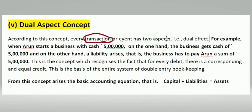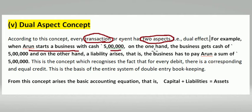Over your transactions, two aspects will be affected. That will affect the two aspects. One example: I start a business with 5 lakh.